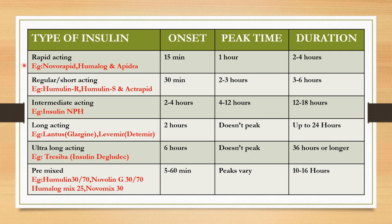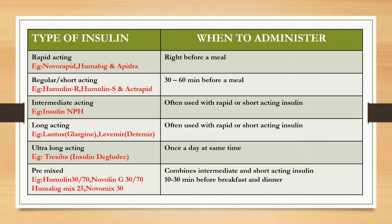Here are some known examples for each type. Rapid-acting insulin: Novarapid, Humalog, and Apidra. Regular or short-acting insulin: Humulin-R, Humulin-S, and Actrapid. Intermediate-acting insulin: the best example is insulin NPH. Long-acting insulin: Lantus (insulin Glargine) and Levemir (insulin Detemir). Ultra-long-acting insulin: Tresiba (insulin Degludec). Pre-mixed: Humulin 30/70, Novolin-G 30/70, Humalog Mix 25, and Novomix 30. I hope now you have a clear idea about onset, peak time, and duration of each type of insulin.